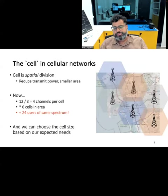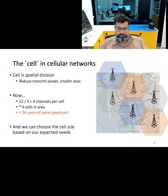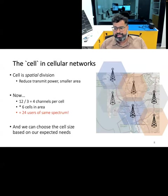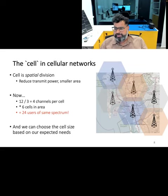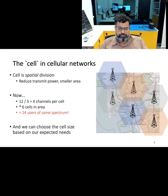In response to these challenges, efforts were made to limit the communication range from a tower to a smaller geographical area, and this paved the way for cellular networks. The primary objective was to reduce the transmit power and enable coverage to a more confined area.